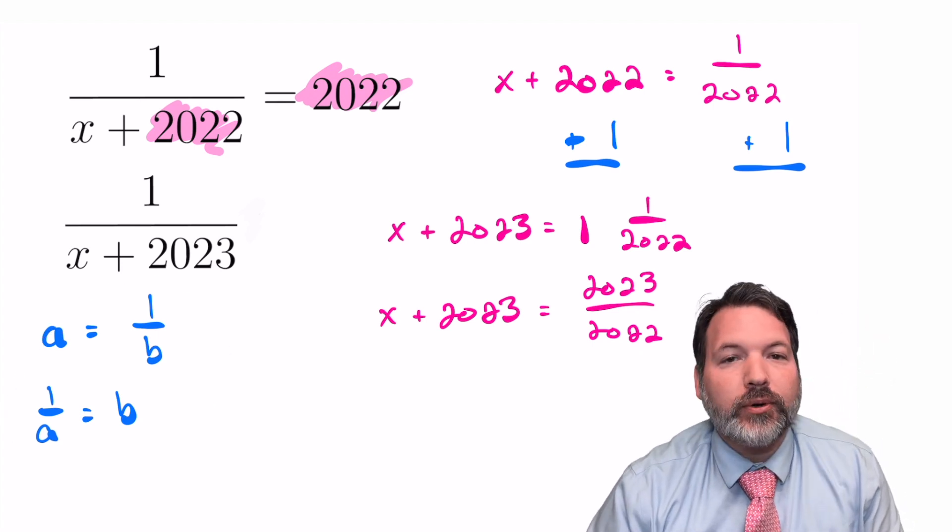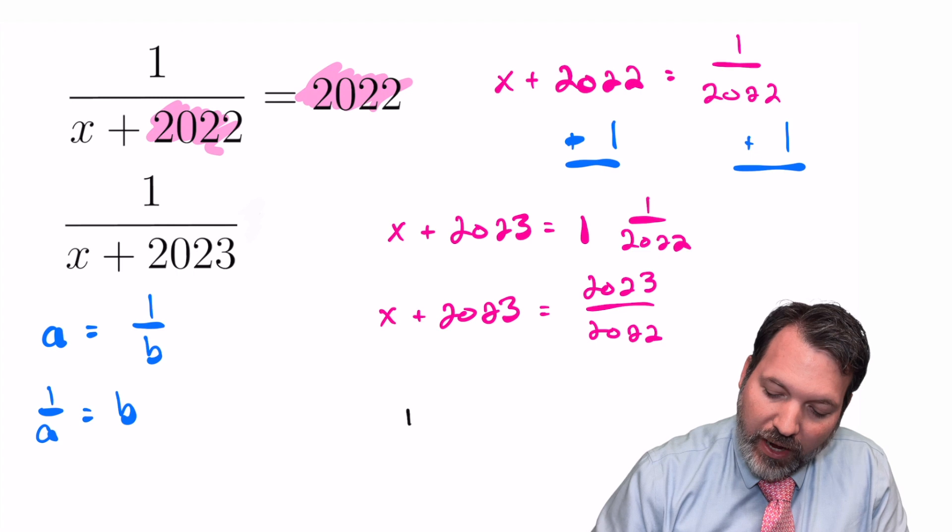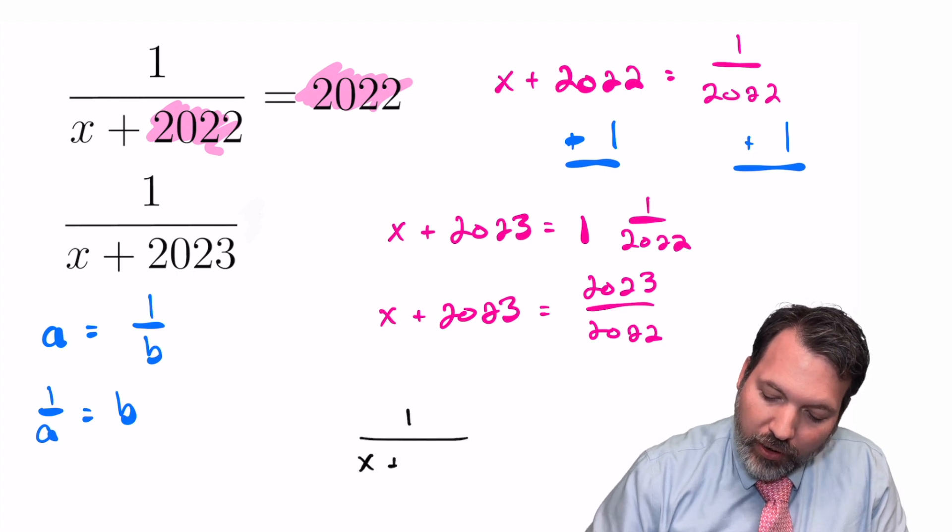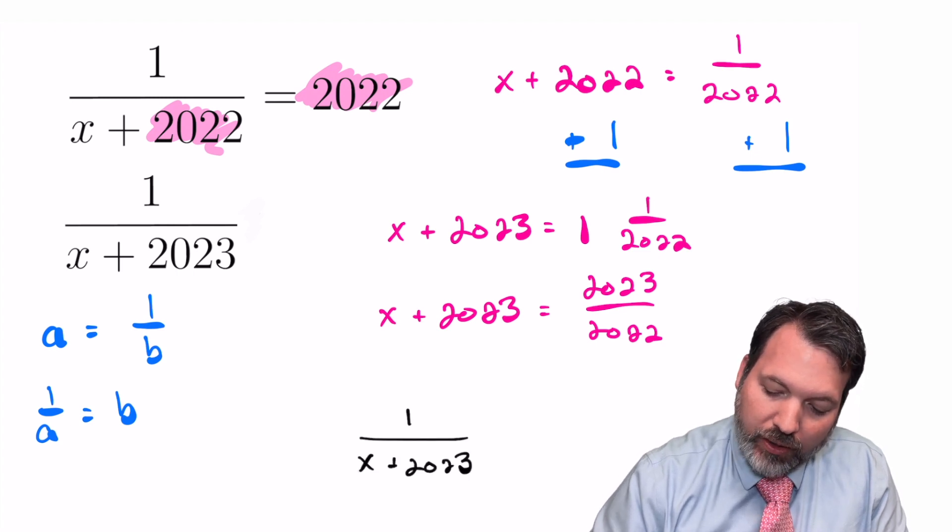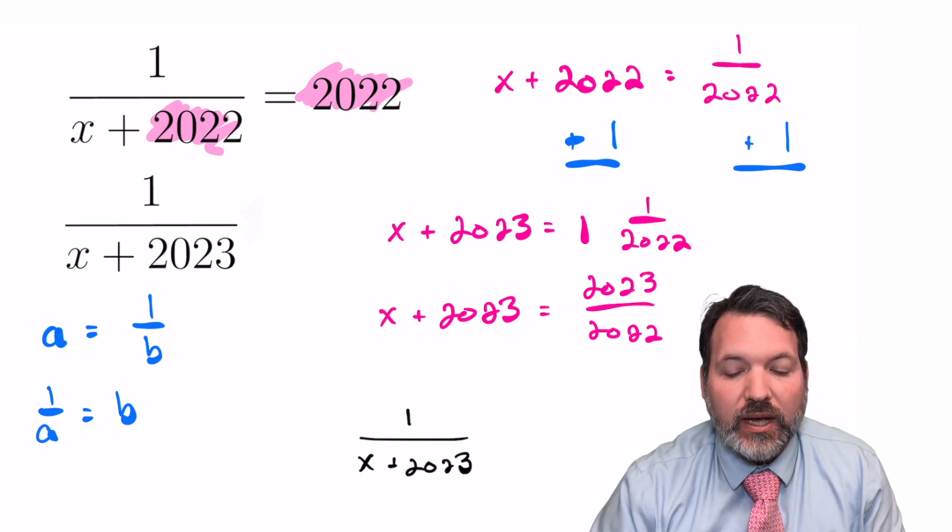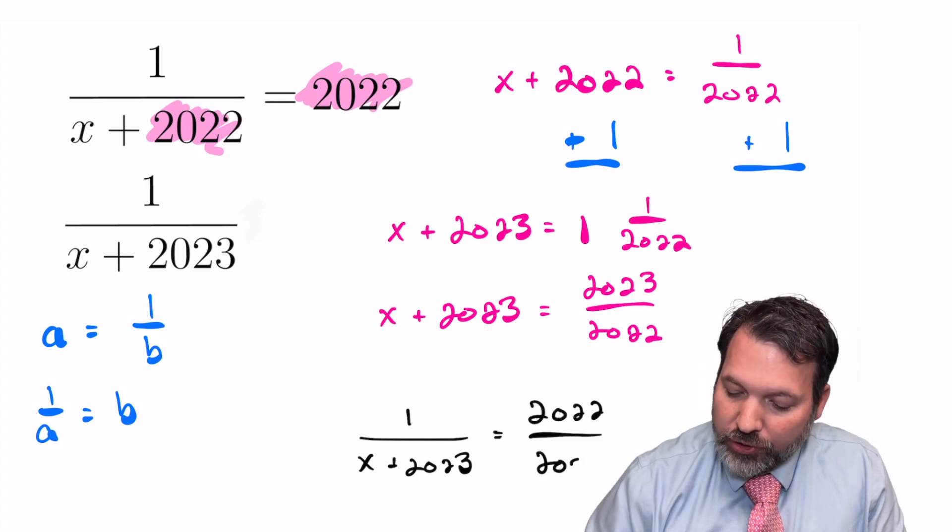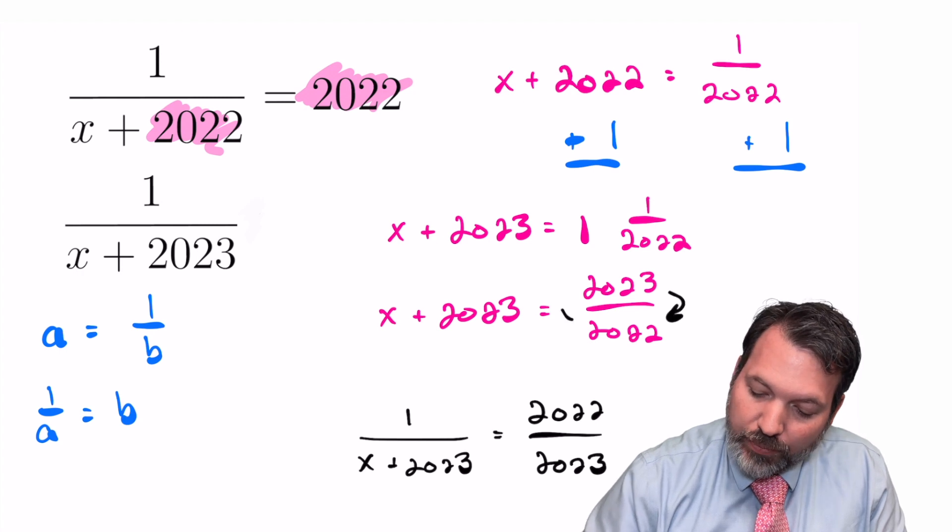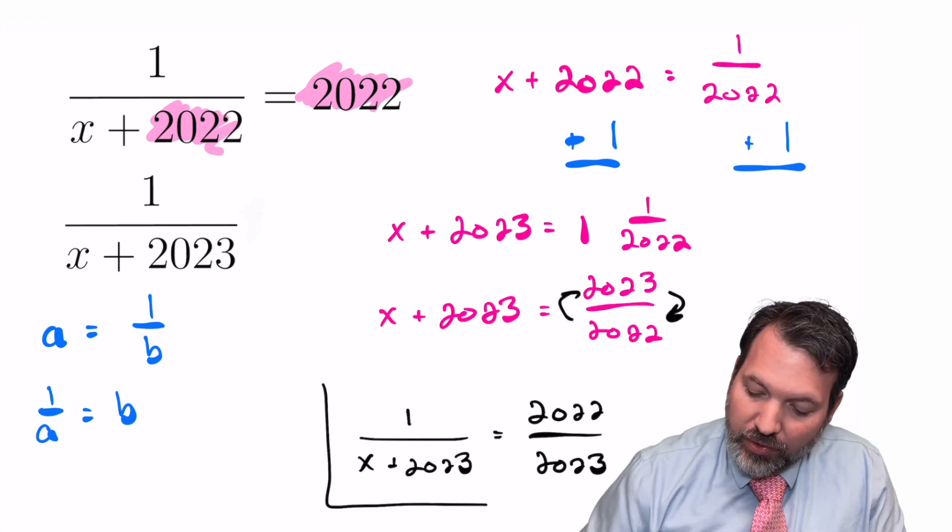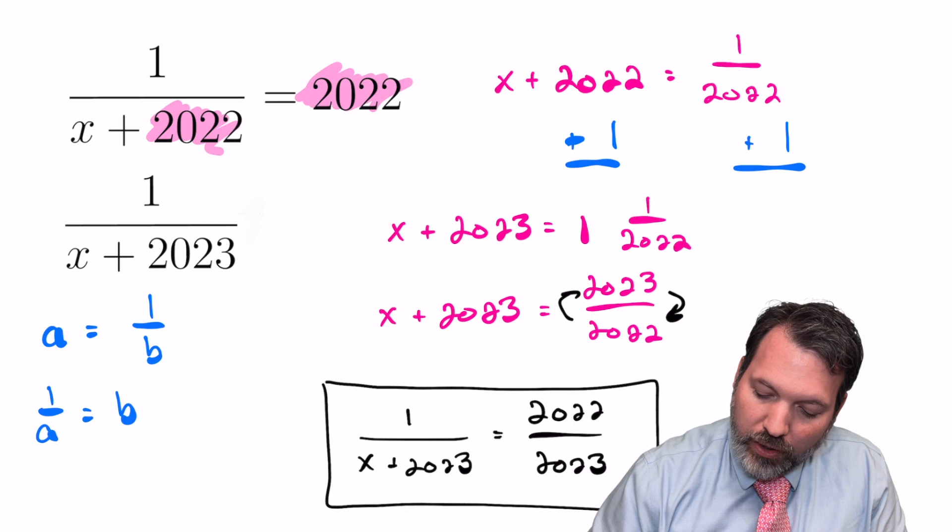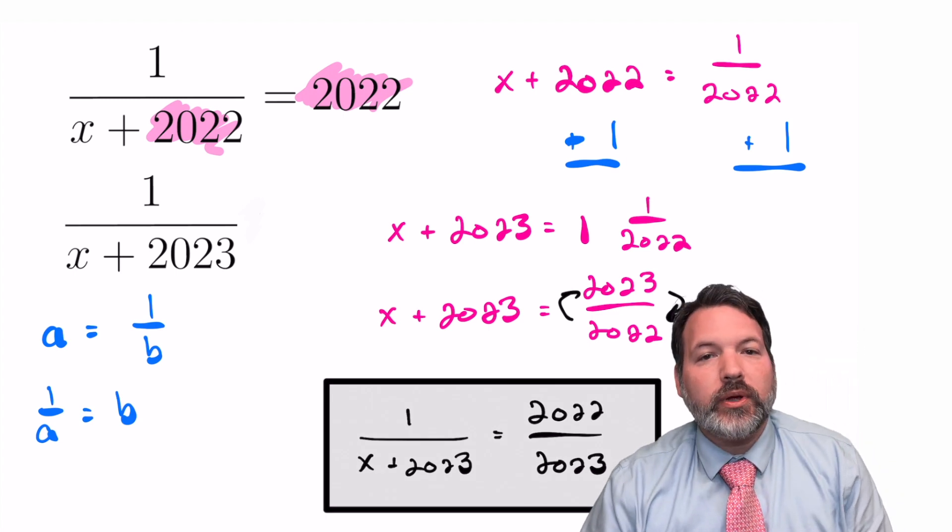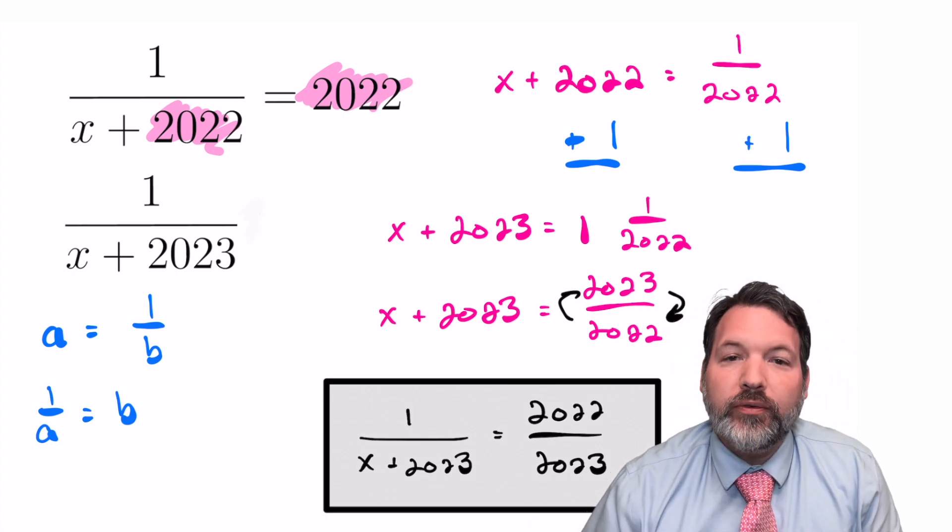From here, we're going to apply the reciprocal identity once again, and so now we can say 1 over x plus 2023, that is the reciprocal of this left side here, is going to be equal to 2022 over 2023. That is the reciprocal of the right side. And so there you have it, problem solved. 1 over x plus 2023 equals 2022 over 2023.